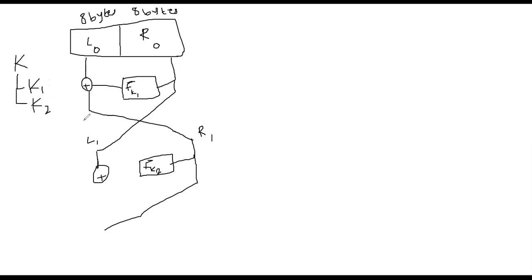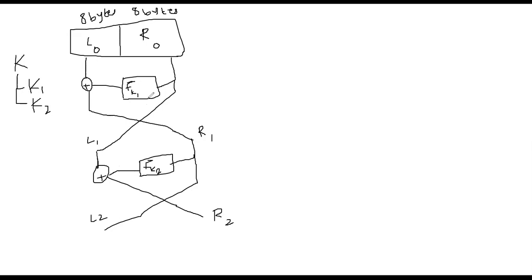Imagine we have a way to derive a bunch of keys. Now this repeats one more time for the second round. What we get is L2 and R2 — the output of the second round. So here is the data, here is the first round, and here is the second round.